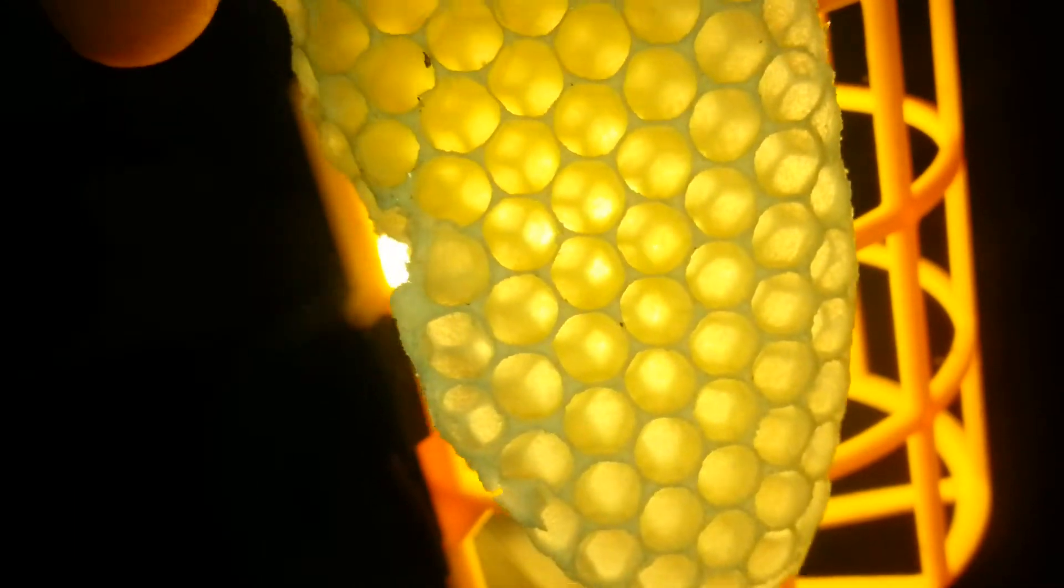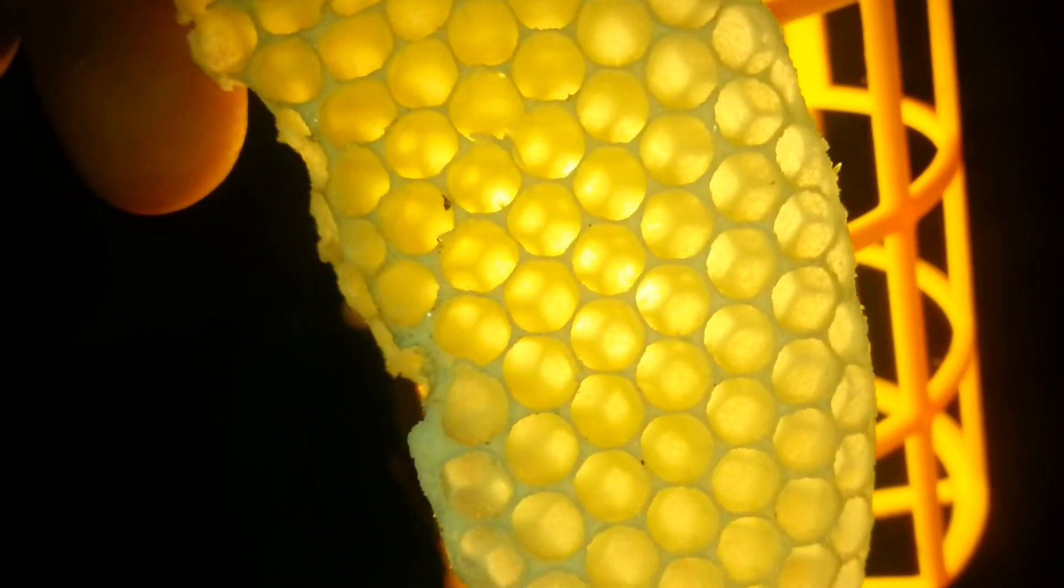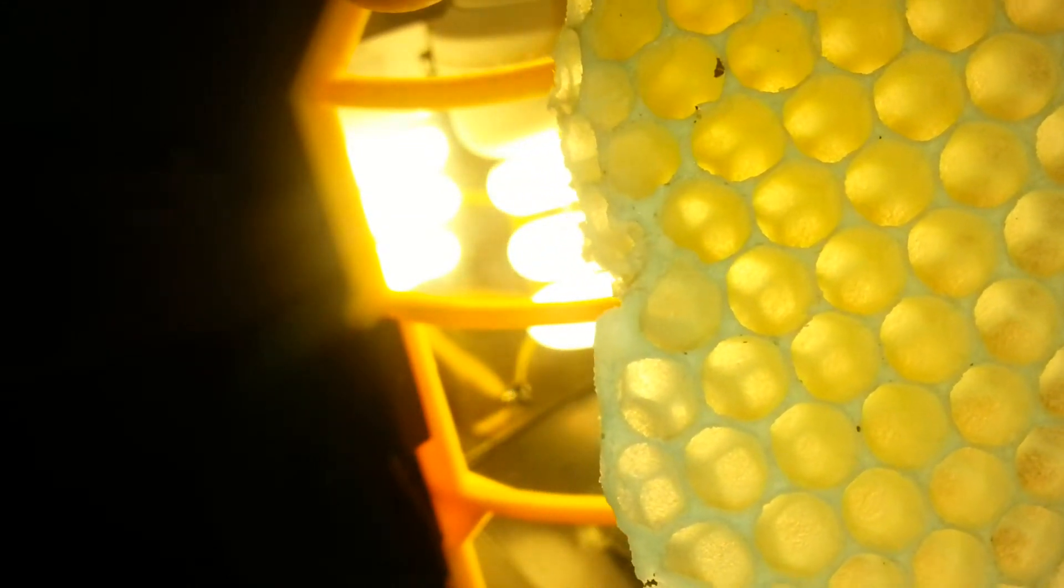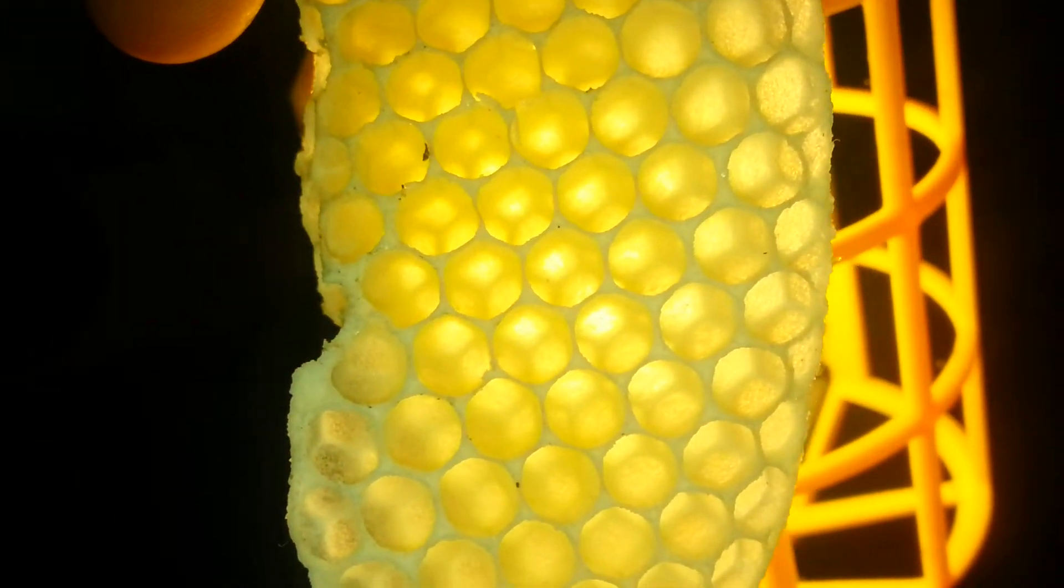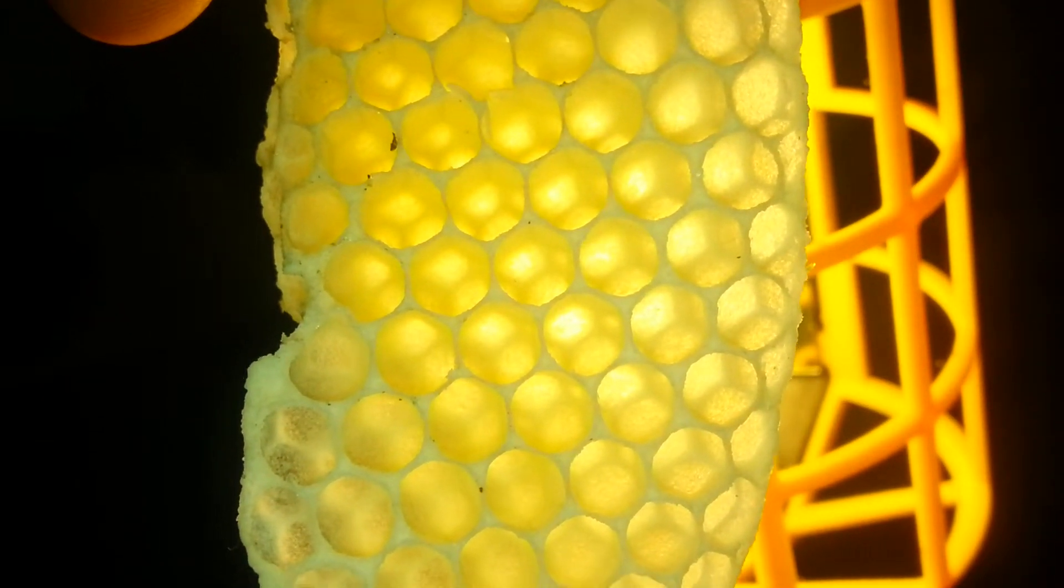It is quite fascinating. They build their comb 15 degrees towards the sky, upwards from the ground, simply so that the honey doesn't pour out.